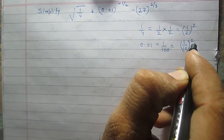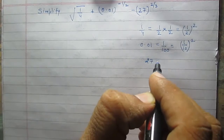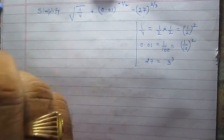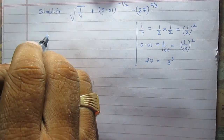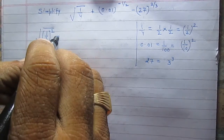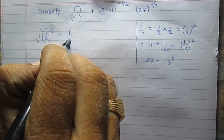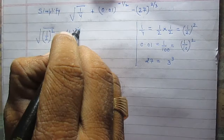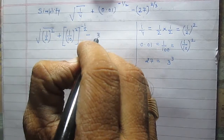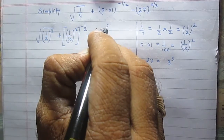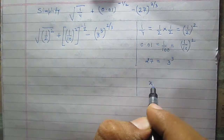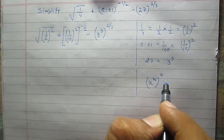Similarly, 27 is 3 raised to the power 3. Using these substitutions, we rewrite the expression: the first term is 1 by 2 squared under square root, plus 1 upon 10 raised to the power 2 then raised to the power minus 1 by 2, minus 3 raised to the power 3 then raised to the power 2 by 3. According to the laws of exponents, x raised to the power m raised to the power n equals x raised to the power m times n.